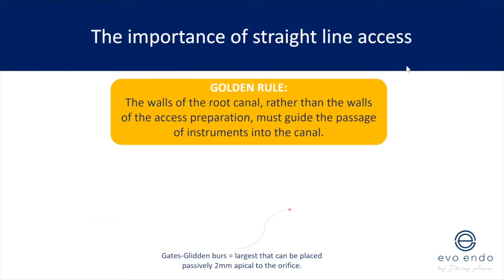Golden rule: it should be the walls of the root canal rather than the walls of your access preparation that guide the passage of instruments into the canal.